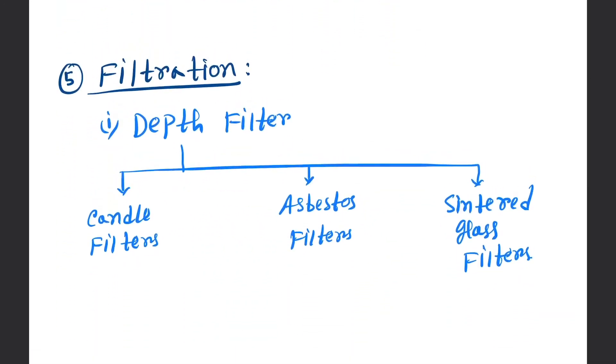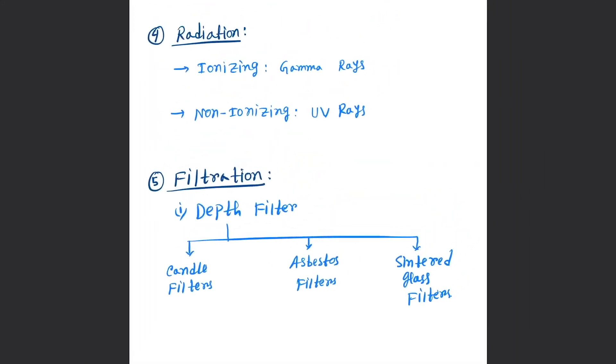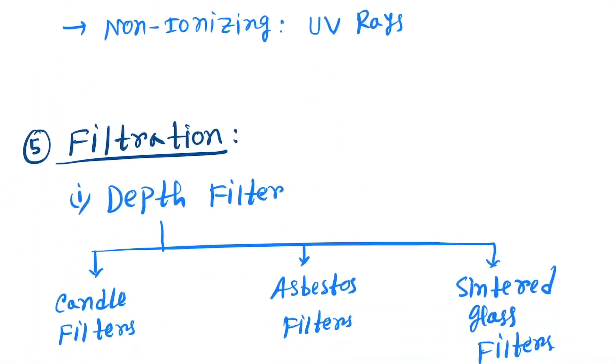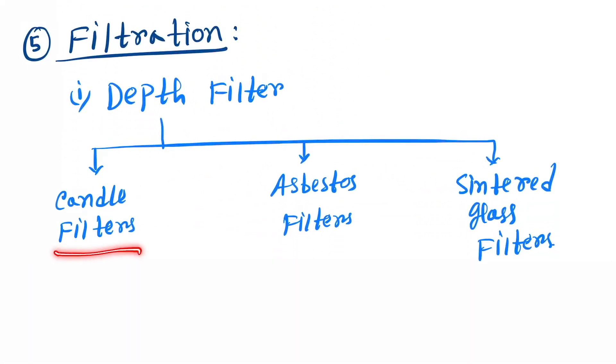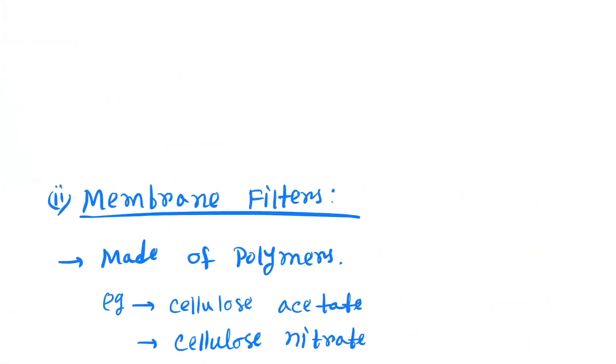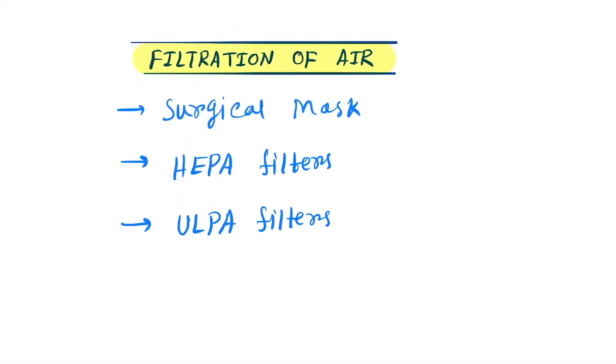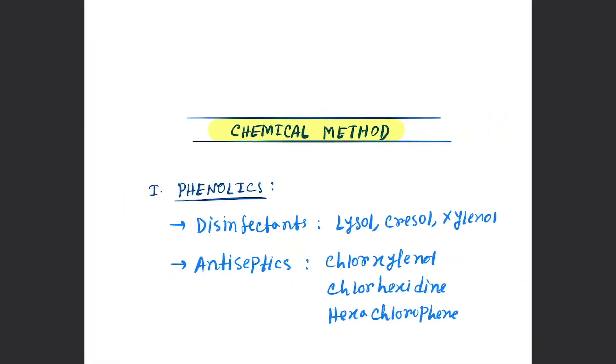Next is filtration. We use two types of filters: depth filters and membrane filters. Depth filters: we use three types - candle filters, asbestos filters, and sintered glass filters. Membrane filters made of polymers: three mainly - cellulose acetate, cellulose nitrate, and polycarbonate. Filtration of air uses surgical masks, HEPA filters, and ULPA filters.